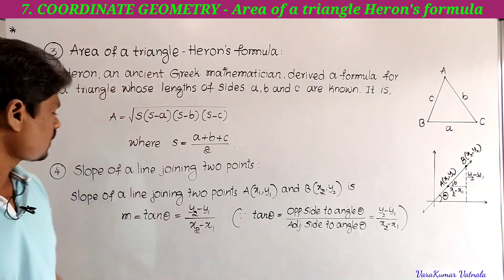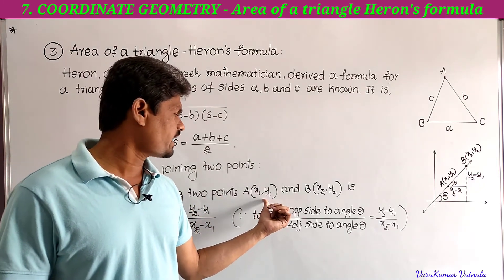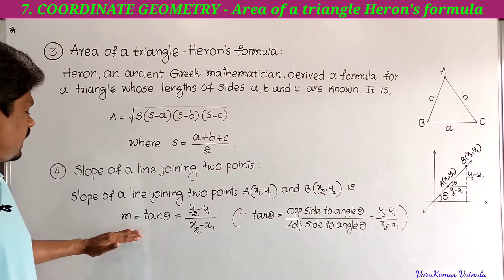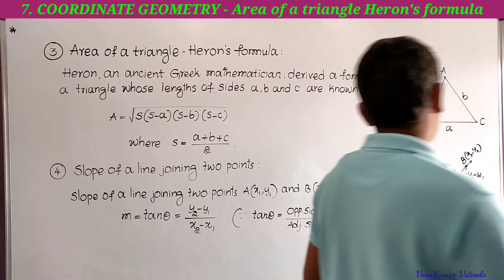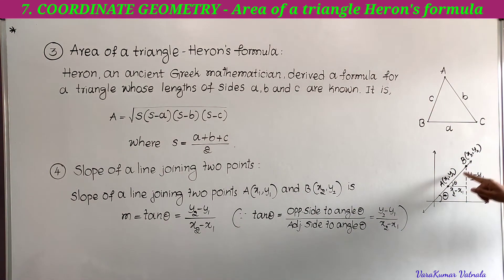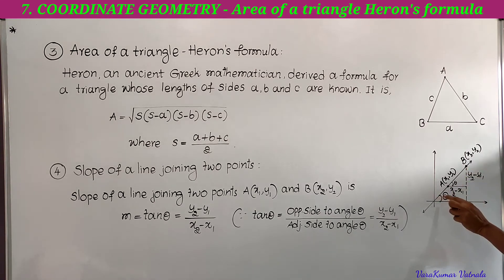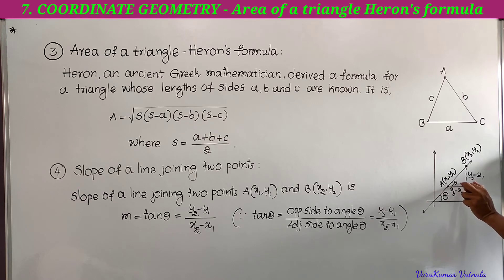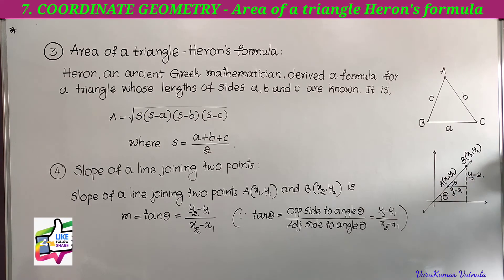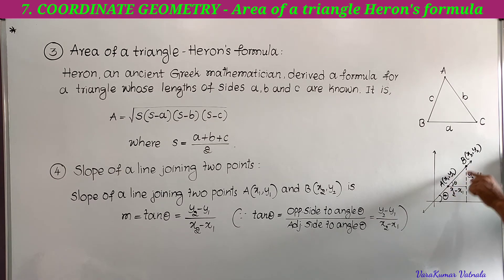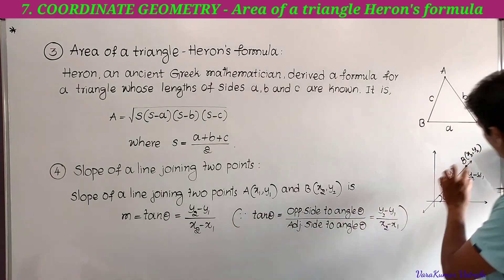Now, the slope of a line joining two points A(x1, y1) and B(x2, y2) is m = tan θ = (y2 − y1) / (x2 − x1). Here the x-axis and y-axis are shown. The line makes angle θ with the x-axis. Drawing a parallel line to the x-axis, since these are corresponding angles, the vertical length becomes y2 − y1 and the horizontal length becomes x2 − x1.